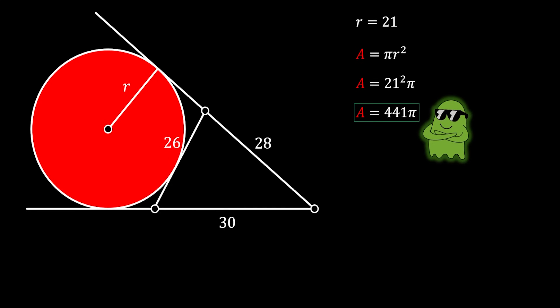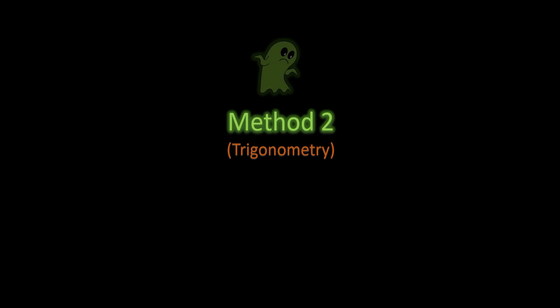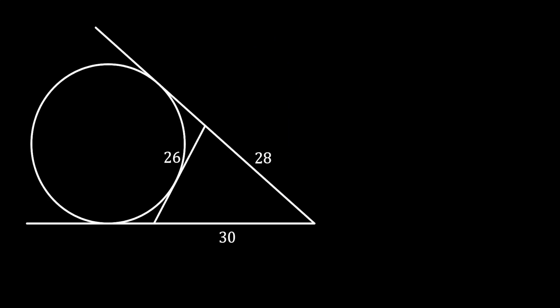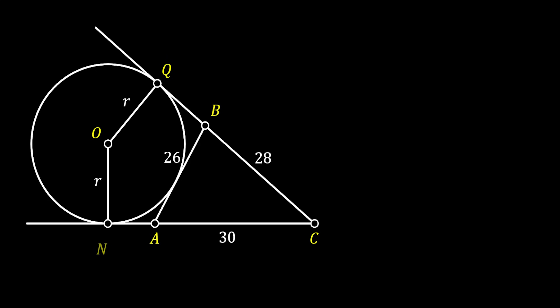Now let me show you another method, which is a bit quicker — this method uses trigonometry. We start by labeling the vertices as A, B, C as before, the center as O, and the radius as R. We label the tangency points as N and Q, just as in the previous method, and bring in the already-calculated values NA = 12 and QB = 14.